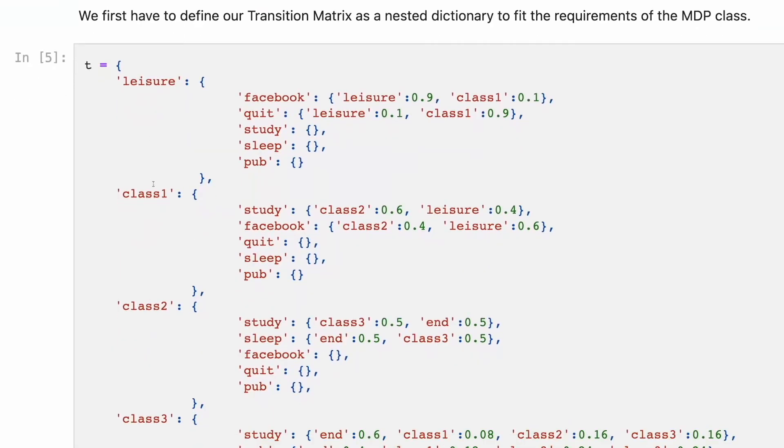for each state, and we have four states, we have a chance that making a decision to move to that state, we actually receive it. So going leisure from Facebook will be 90%, going class from Facebook will be 10%, and quitting on the contrary.